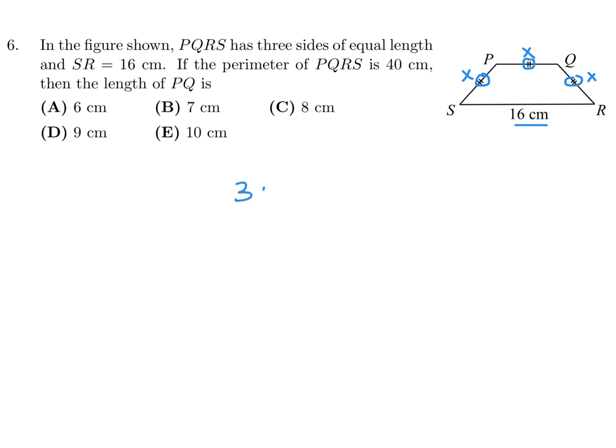So the total perimeter is 3X plus 16, right? And they told me that the perimeter is 40. So that's my equation. And then I'll solve for X. 3X would be 24, and therefore, X is 8.